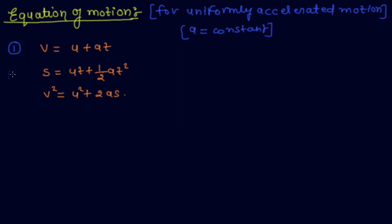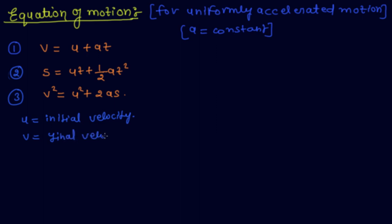These three equations are used for determining initial velocity, final velocity, time taken, distance or displacement traveled, or acceleration. Where U equals initial velocity, V equals final velocity, A equals acceleration, T equals time taken, and S equals distance traveled by an object.